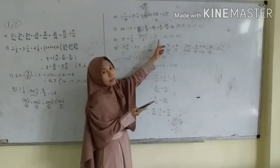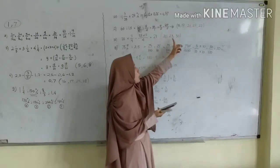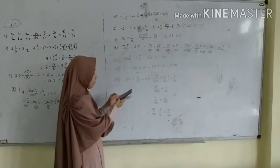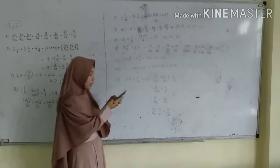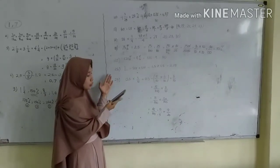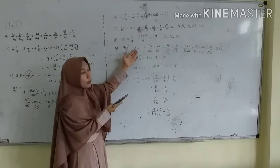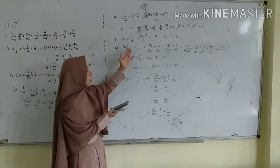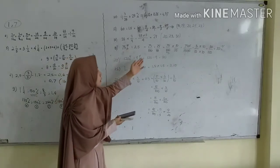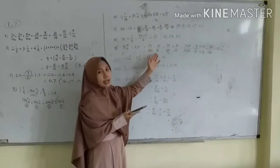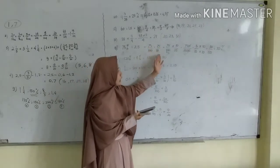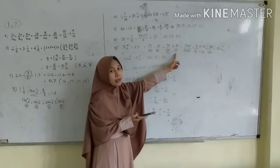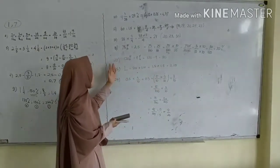Nomor 18. Nomor 18 itu adalah hasil dari 25% dibagi 2/5. Nah lagi-lagi bentuknya berbeda maka yang persen lagi adalah jadikan menjadi pecahan. Kalau sudah menjadi pecahan, kembalian bisa dijadikan perkalian yang belakang dibalik gitu aja.